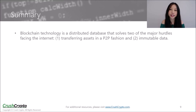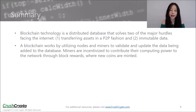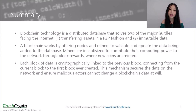So in summary, blockchain technology is a distributed database that has provided solutions to two of the major hurdles facing the internet: transferring assets in a peer-to-peer fashion and immutable data. A blockchain works by utilizing nodes and miners to validate and update the data that is being added to the database. Miners are incentivized to contribute their computing power to the network through block rewards where new coins are minted. Each block of data in the blockchain is cryptographically linked to the previous block, connecting from the current block to the first block ever created. This mechanism secures the data on the network and ensures malicious actors cannot change a blockchain's data at will.